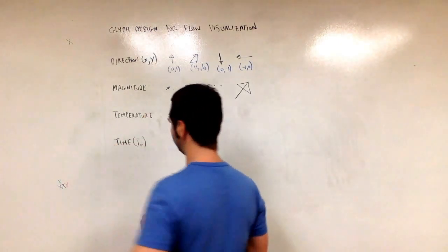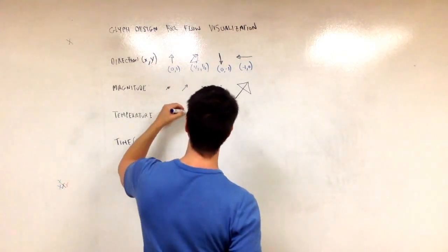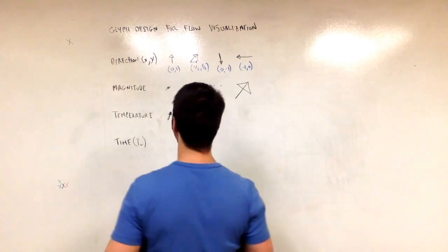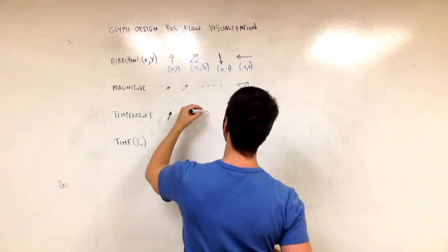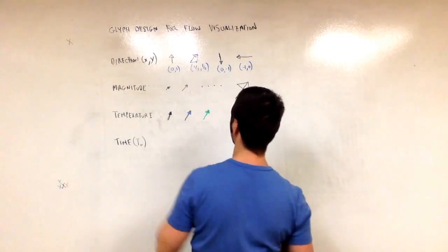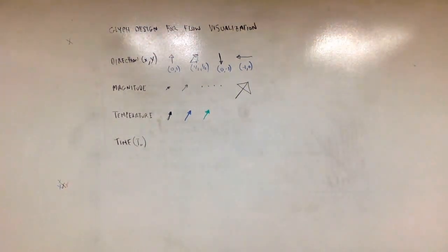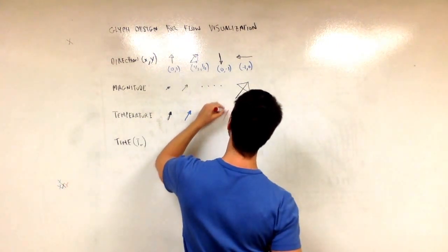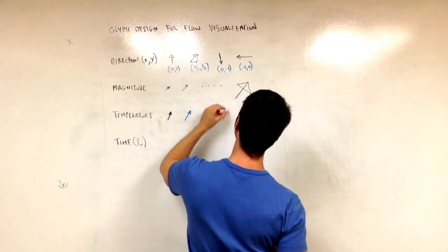And then we could have the blue arrow for a little bit of temperature that's a little bit warmer. So this is supposed to be a green arrow. I don't know how well that shows up. And then this is supposed to be a red arrow.